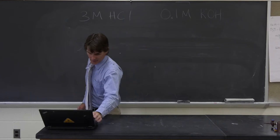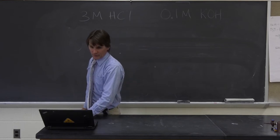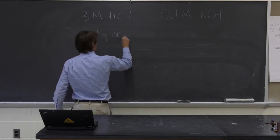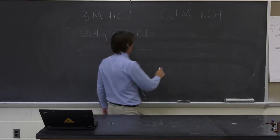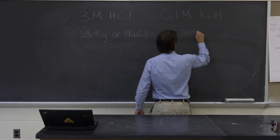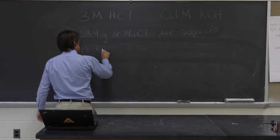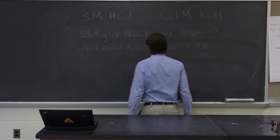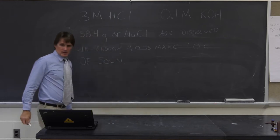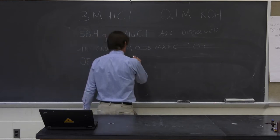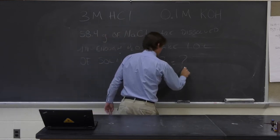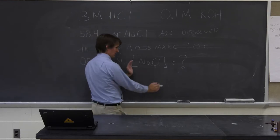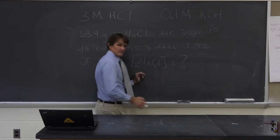This is best demonstrated by doing a simple problem — I'm going to use PowerPoint slide number two of the 4B solution concentration PowerPoint. It says: 58.4 grams of sodium chloride — that's just salt — are dissolved in enough water to make one liter of solution. What's the concentration of sodium chloride? Remember, if we put a compound in brackets, it means the concentration of. So this is asking: the concentration of sodium chloride is what?